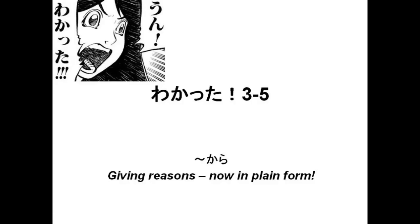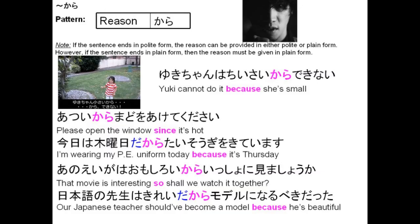3-5: kara — giving reasons now in plain form. As we discussed in unit 2, we use kara to indicate a reason, but now we're doing it in plain form. Note that if the sentence ends in polite form, the reason can be provided in either polite or plain. But if the sentence ends in plain form, then the reason must be given in plain form.